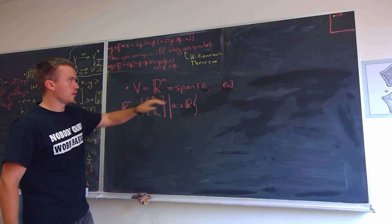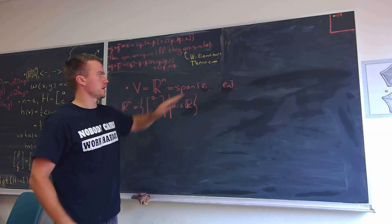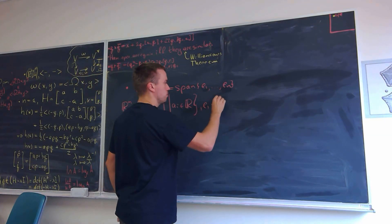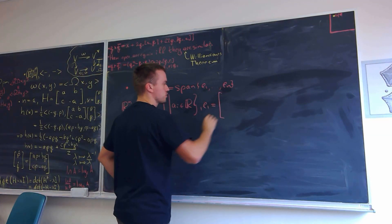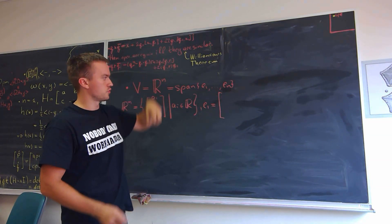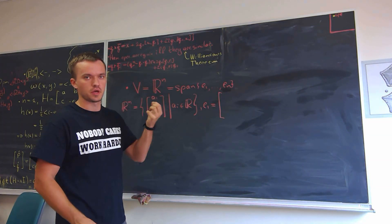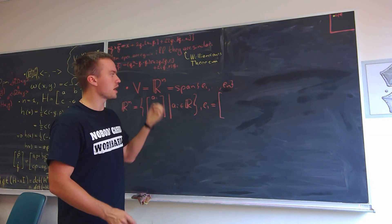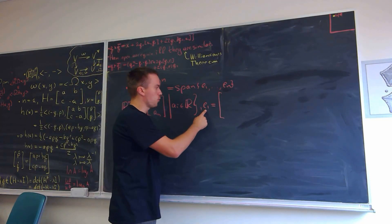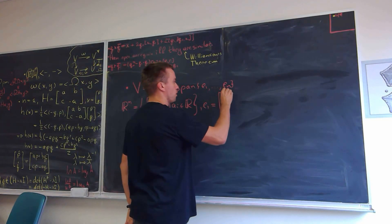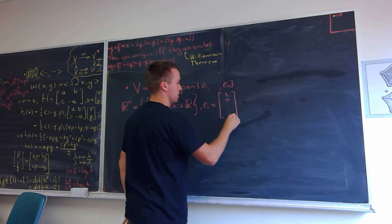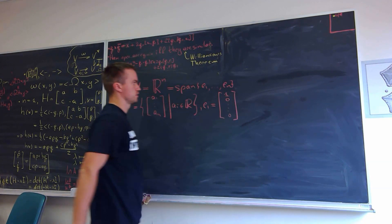And then how do we define E_i? I'm going to show you an example. E_i is going to be a vector where all entries are zero except the i-th entry, which is equal to one. So for example, E1 is going to be one followed by zeros — so all other entries are going to be zeros.